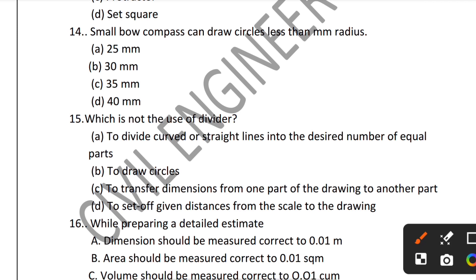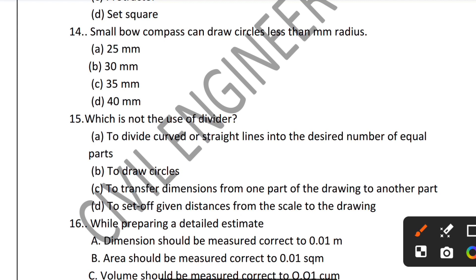Question 15: Which is not a use of a divider? The uses of a divider include: dividing lines into equal parts, transferring dimensions from one part of a drawing to another, and setting up given distances from a scale to a drawing. Drawing a circle or arc is not a primary use of the divider, so that option is the correct answer for the incorrect use.